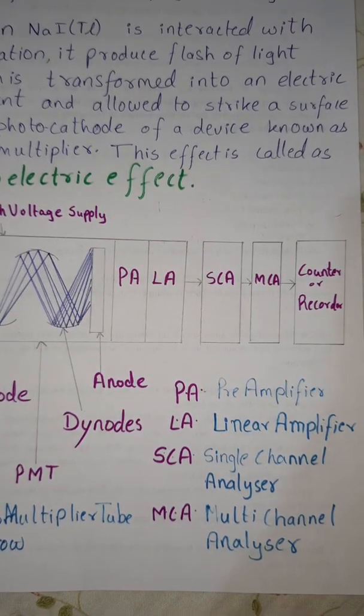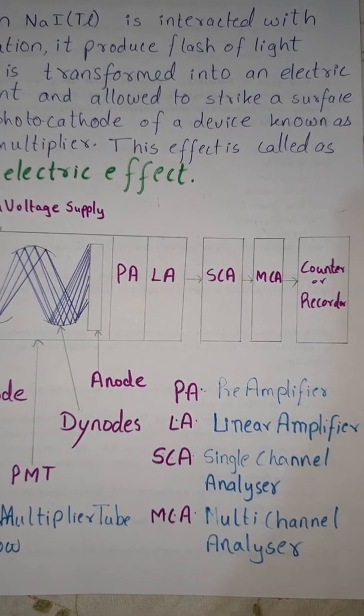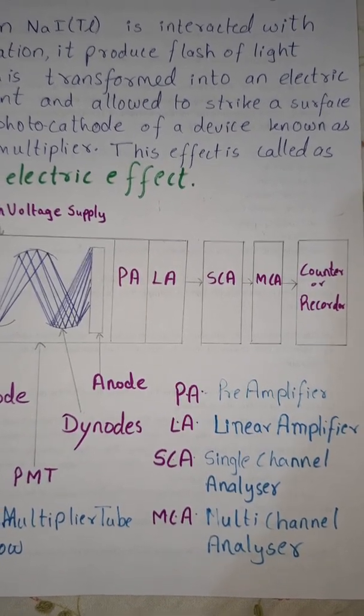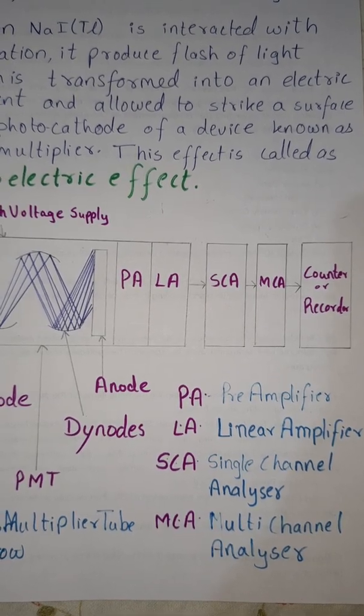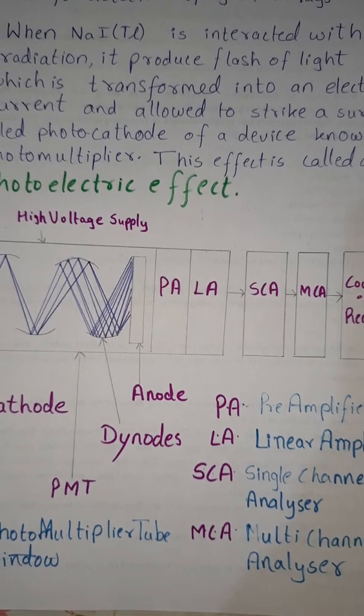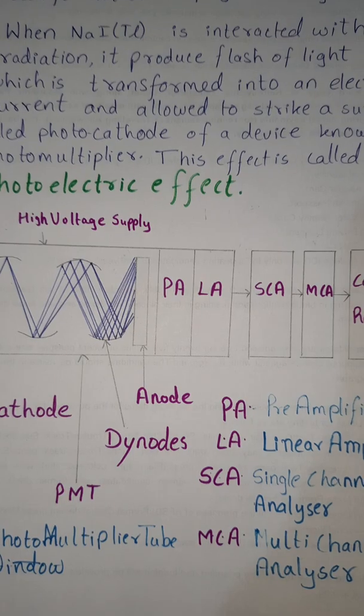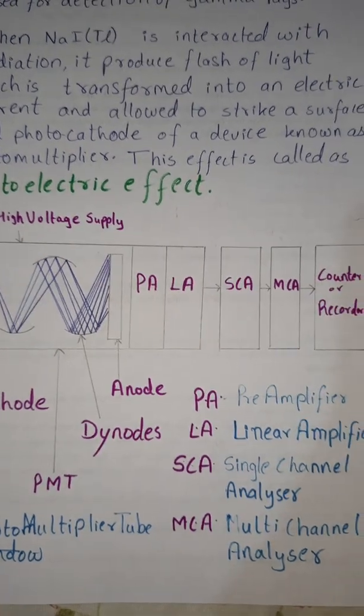From here on they are sent to SCA MCA which is single and multi-channel analyzer and finally they are sent at the counter for observation. What is the role of PA and LA? It is the amplification of the signal so that the device can use it for the purpose of calculation.